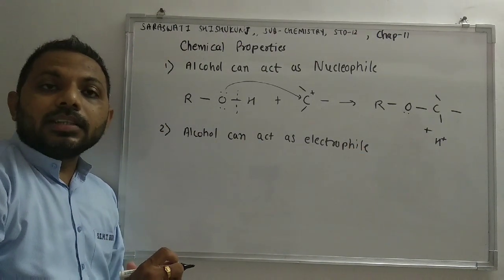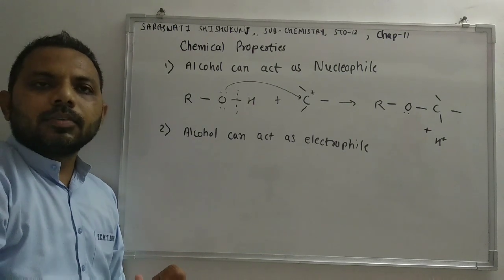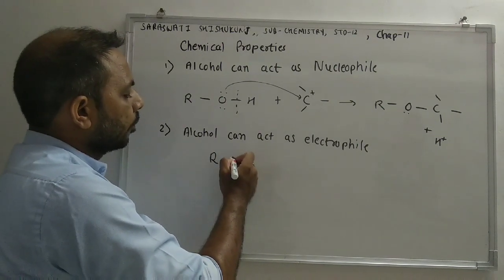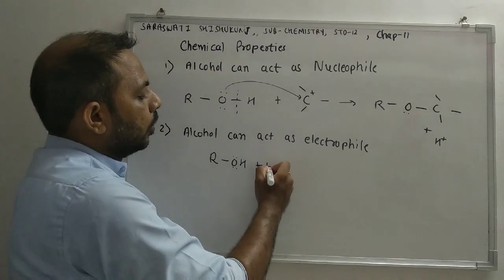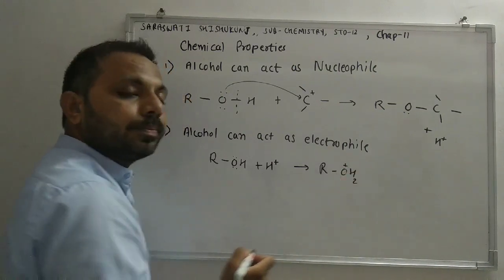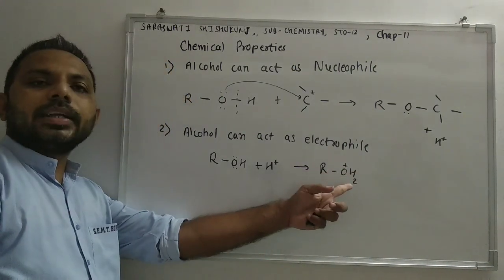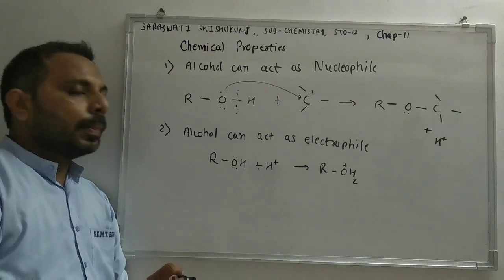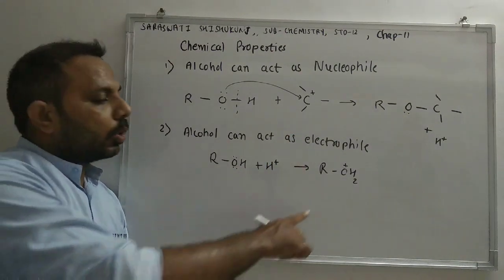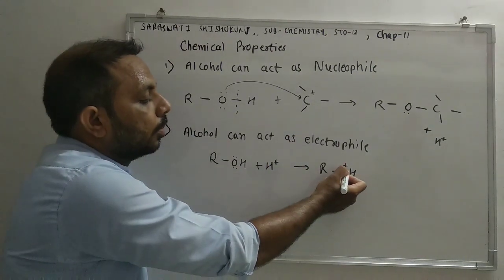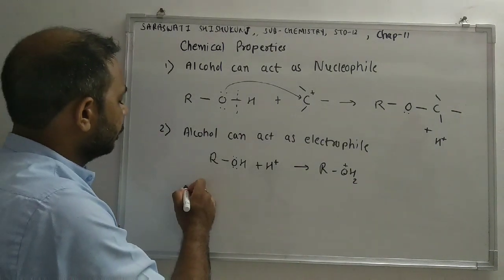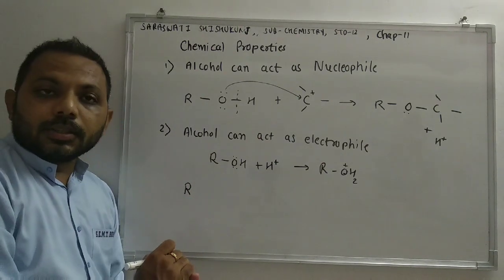In the second case, alcohol can act as an electrophile. For this, alcohol should be protonated, meaning a proton should be added to the alcohol. This is protonated alcohol. Whenever alcohol acts as an electrophile, it should be in protonated form — it should have an extra proton.